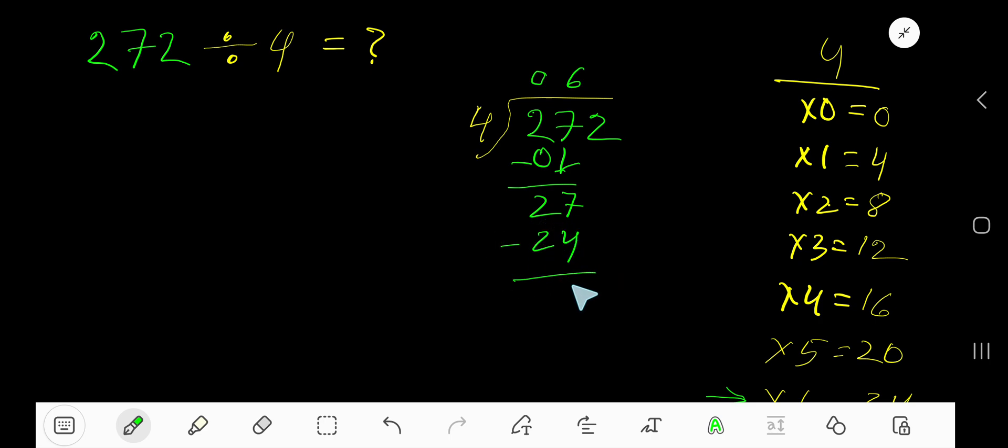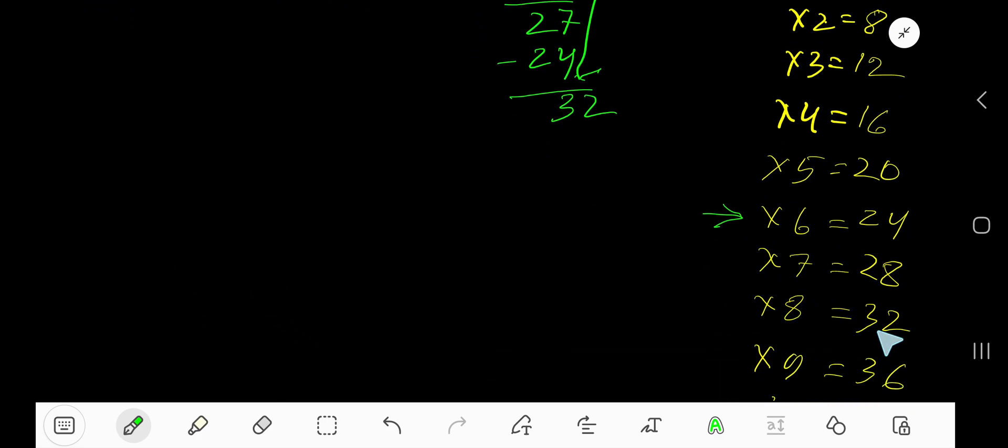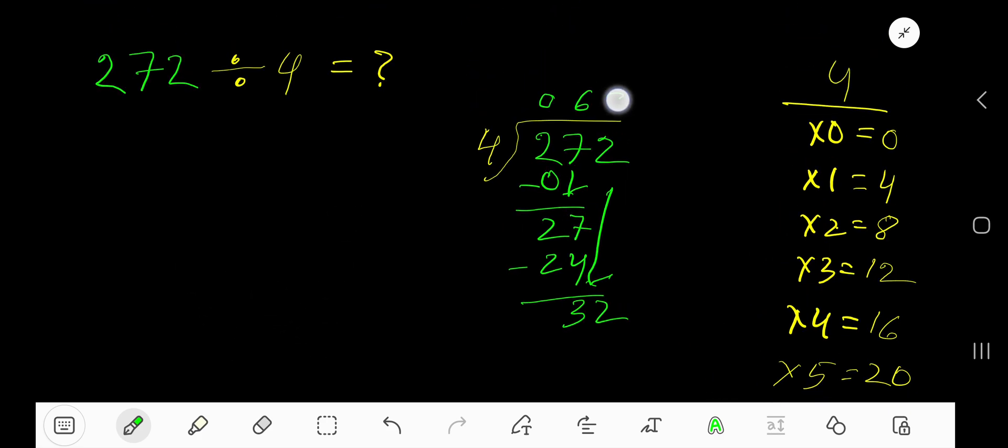Subtract, you are getting 3. Bring down this 2. 4 goes into 32 how many times? 8 times. 8 times 4 is 32. Subtract, 0. Our answer is 68.